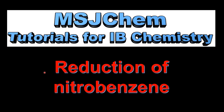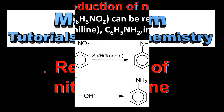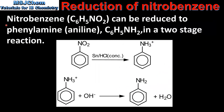This is MSJChem. In this video I'll be looking at the reduction of nitrobenzene. Nitrobenzene can be reduced to phenylamine, which is also known as aniline, in a two-stage reaction.